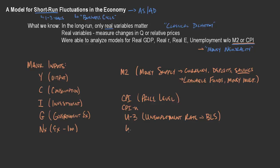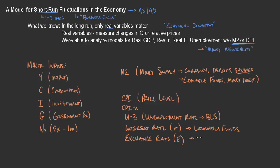We also have the interest rate, often abbreviated as R, which is really on loanable funds that we've been interested in. And we've got the exchange rate, abbreviated as E — this is the exchange rate for how much of another currency you can purchase with domestic currency, which is relevant to trade. So that's a good summary of what we've been talking about as we go into a short-run model. That short-run model we're going to begin here by discussing aggregate demand.